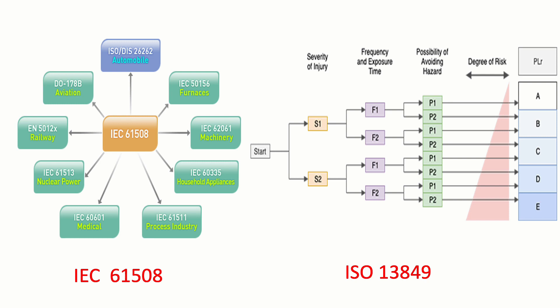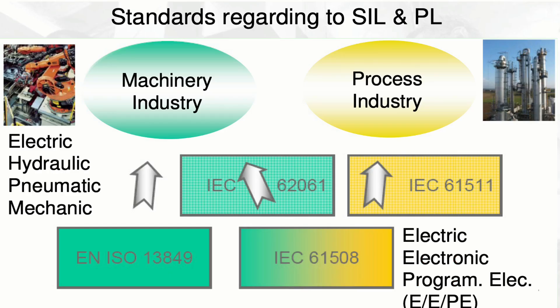IEC 61508 is mainly used for electrical and electronic programmable devices, while ISO 13849 covers mechanical, pneumatic, and electrical components. Under IEC 61508, the sub-standard IEC 62061 applies to machinery industry and IEC 61511 applies to process industry. ISO 13849 applies to machinery safety. In ISO 13849, electric, hydraulic, pneumatic, and mechanical systems are covered, whereas IEC 62061 only covers electrical, electronic, and programmable devices.